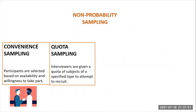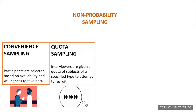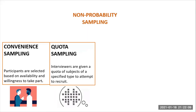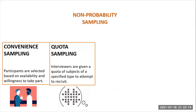Quota sampling is a method of sampling used by market researchers. Interviewers are given a quota of subjects of a specified type to recruit. For example, an interviewer might be told to select 20 adult men and 20 adult women, 10 teenage girls and 10 teenage boys, so that they could interview them about their television viewing habits.